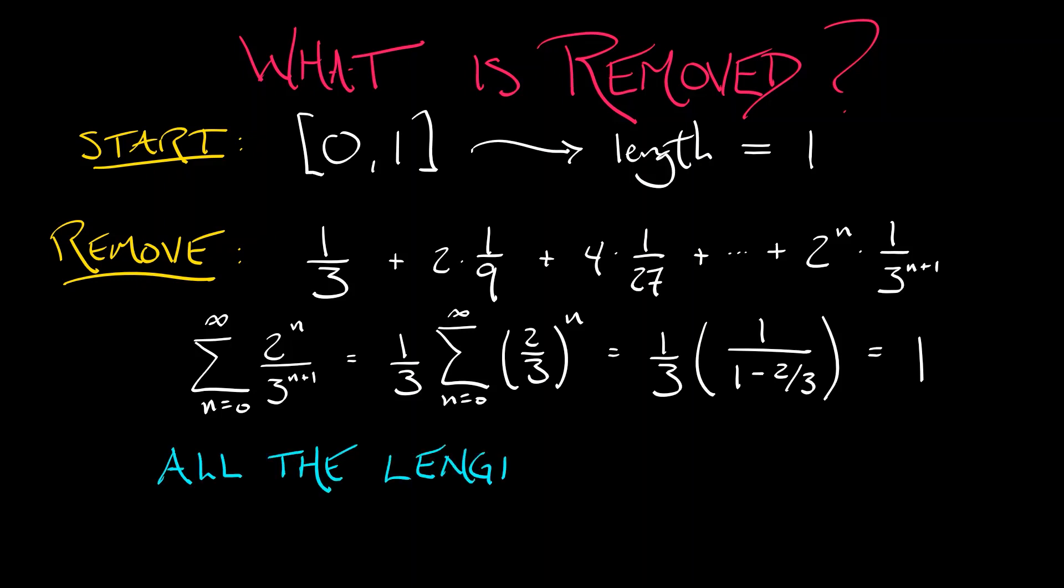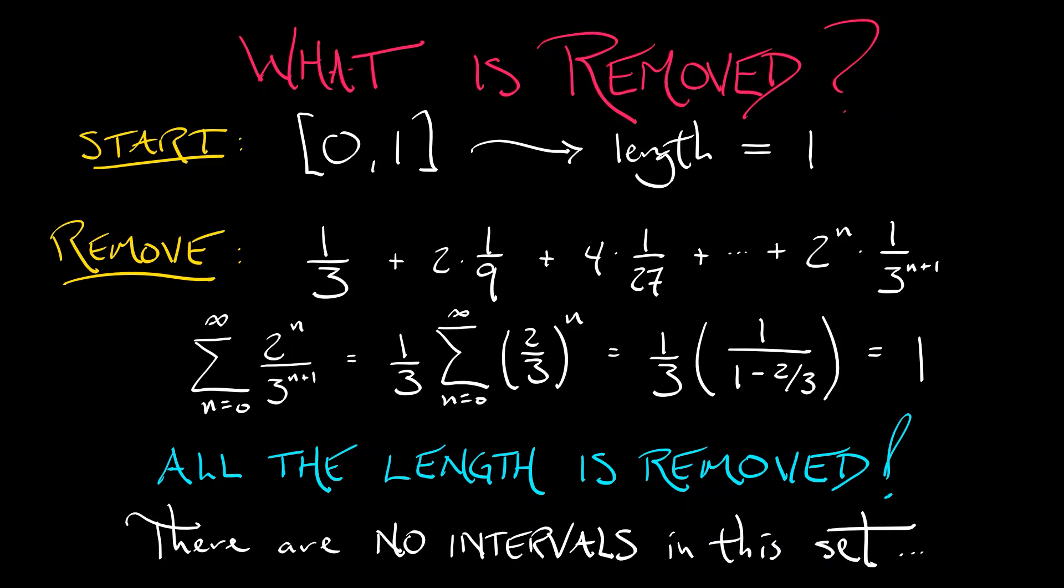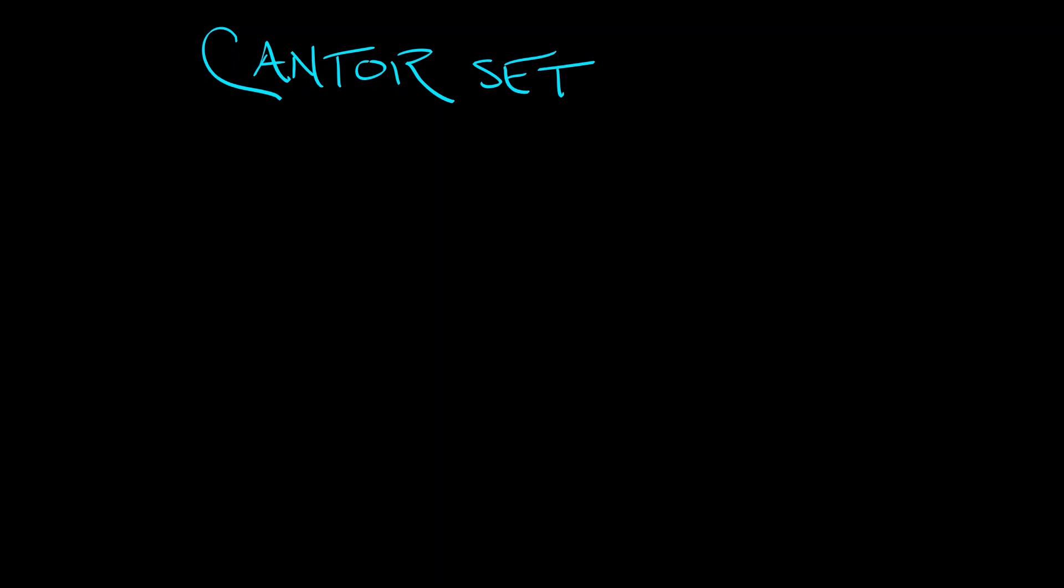What does that mean? What that means is that there's not much left. From the point of view of length or measure, there are no subintervals in this Cantor set. What remains is, well, you might call it dust, just a smattering of points. However, there are a lot of such points which are remaining.